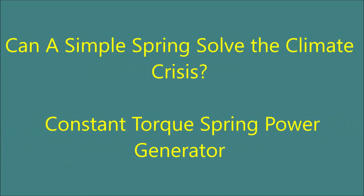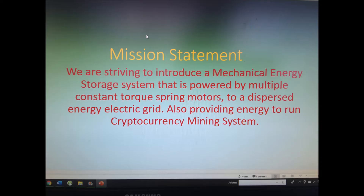Can a simple spring solve the climate crisis? Constant Torque Spring Power Generator — Mission Statement: We are striving to introduce a mechanical energy storage system that is powered by multiple constant torque spring motors to a dispersed energy electric grid, also providing energy to run cryptocurrency mining systems.